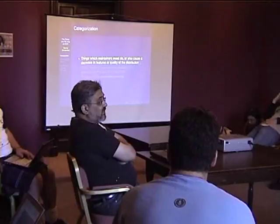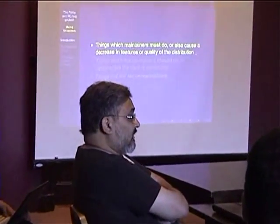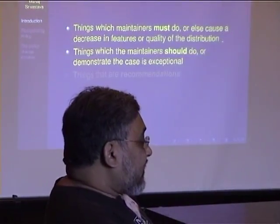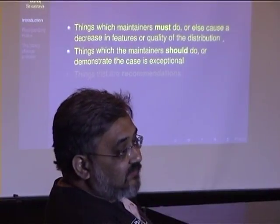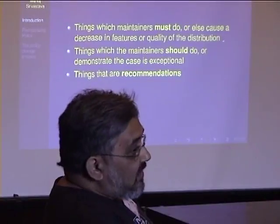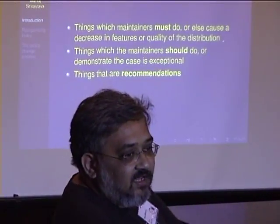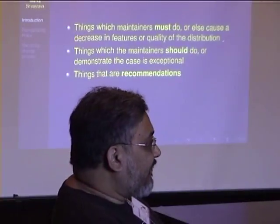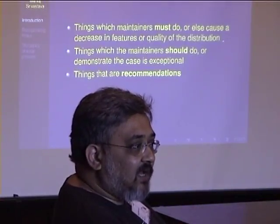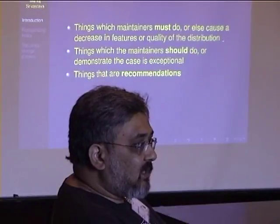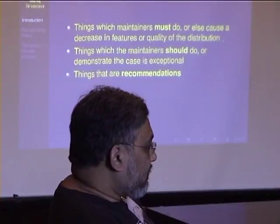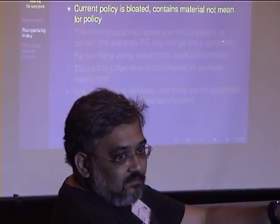We use a broad categorization: things that maintainers must do or it causes a decrease in quality of the features that project promises; things that maintainers should do or demonstrate that their case is an exception; and then things that are just mere recommendations. This is the must/should/may thing in policy. I am open to whether we need to increase the number of categories. Other standard organizations tend to follow that priority level plan as well, but we are certainly different from the IETF in what we mean by these words.